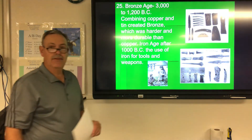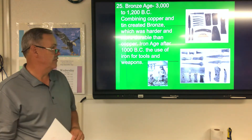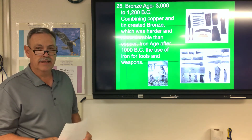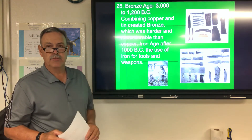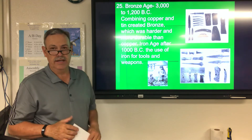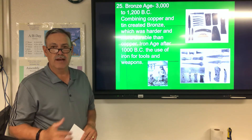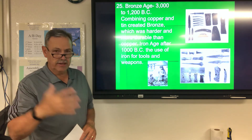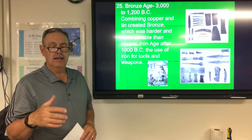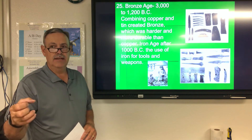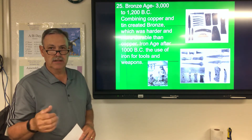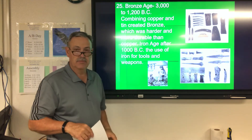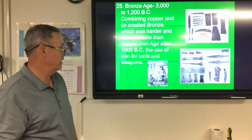With tin and copper together it made bronze, which was a much more durable material. Then the Iron Age, after about 1,000 B.C., saw the use of iron for tools and weapons. Interestingly, Japan never went through an Iron Age — they simply did not have a lot of natural resources. Once they could start importing those resources, they could import iron and turn it into the more durable product of steel.